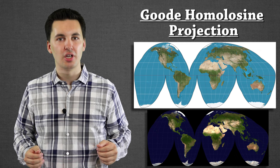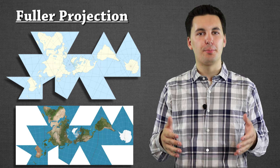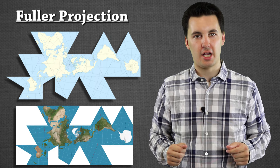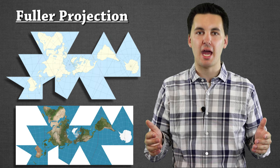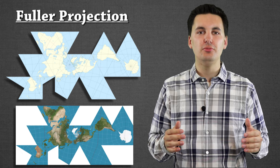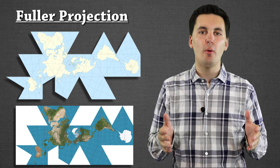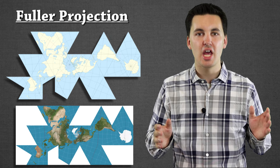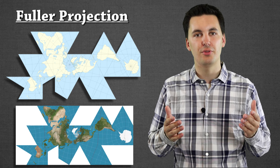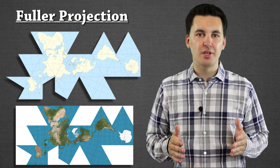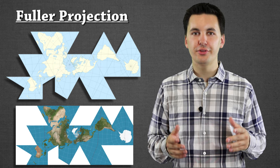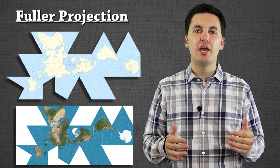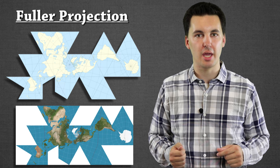Our next map is the one students find most often kind of weird, because it's really different from what we're used to — the Fuller projection. This map does an excellent job at showing and maintaining the size and shape of land masses, and also does a good job of not interrupting them. However, it struggles when it comes to interpretation, because readers are used to maps based on cardinal directions — north, south, east, west — and this map does not use those, making it difficult to interpret. Other characteristics are that it is an interrupted map, with wedges removed, and also a compromise projection, meaning it tries to minimize distortion by spreading it around across size, shape, distance, and direction.